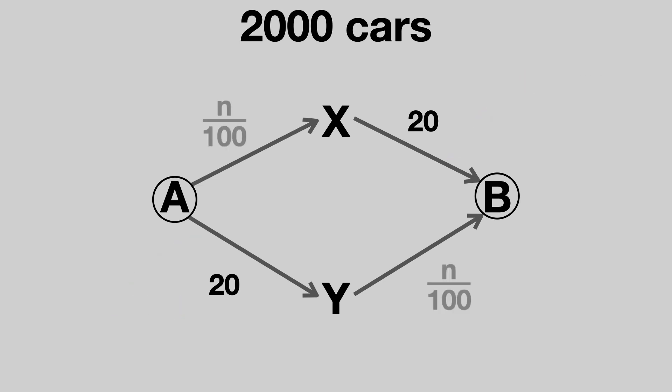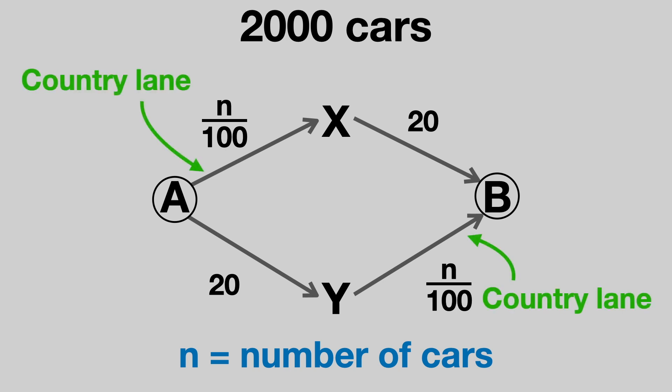The roads A-X and Y-B take N over 100 minutes, where N is the number of people taking this route. This means the journey will take longer if more people use the road, as there's increased traffic congestion. We might think of these as narrow country lanes.